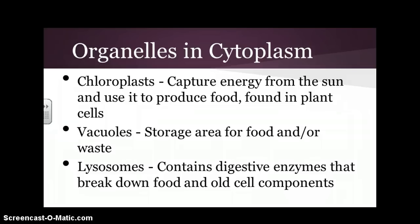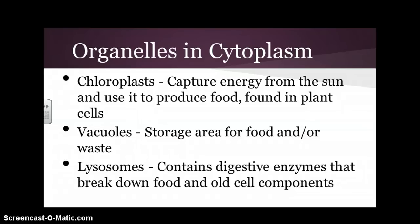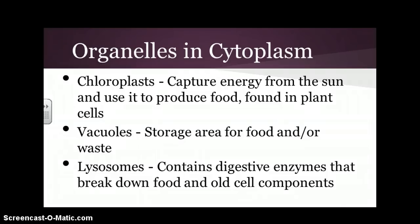Chloroplasts capture energy from the sun and use it to produce food, but remember they are only found in plant cells, not animal cells. Vacuoles are storage areas for food or waste — things the cell is trying to save for later. Lysosomes are another type of organelle; they contain digestive enzymes and break down food and old cellular components.